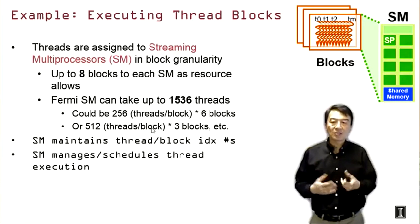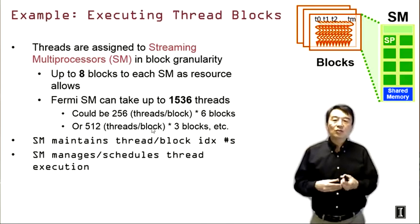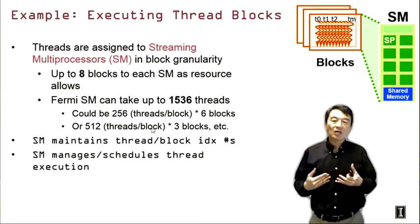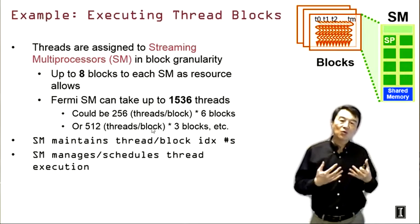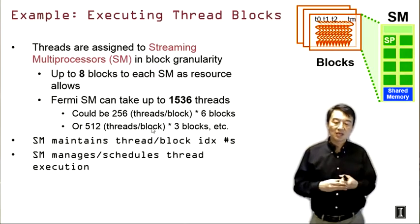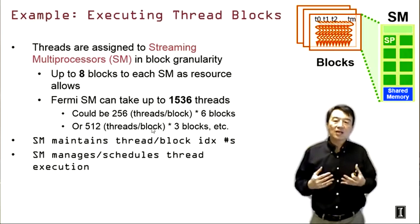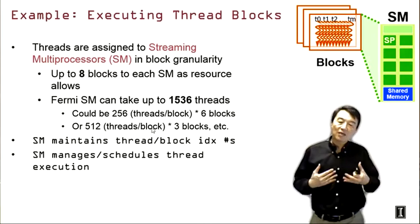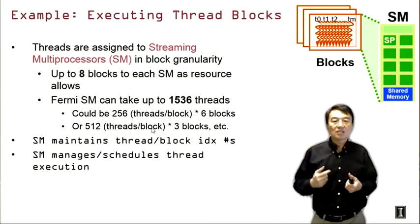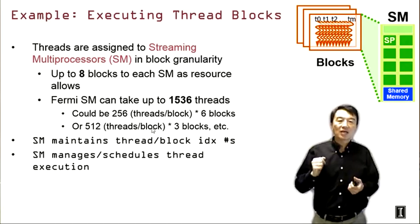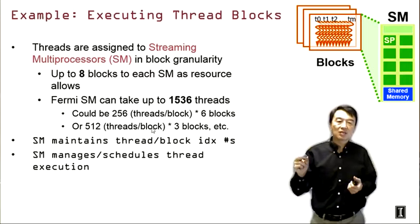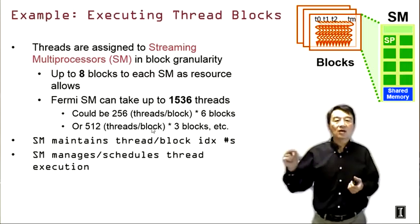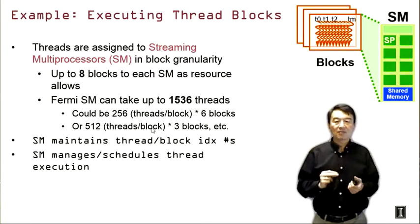In CUDA, threads are actually executed by hardware called the Streaming Multiprocessor, or SM. These SMs are very similar to the CPU cores in a CPU design. Threads are assigned to these streaming multiprocessors at block granularity — that is, all the threads in the same block are assigned to the same SM. If any one of them is assigned to an SM, all the rest of the block will also go to that same SM.